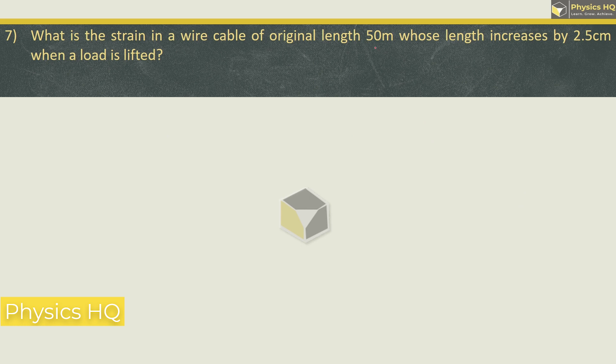What is the strain in the cable of original length 50 meter whose length increased by 2.5 cm? So strain is the change in dimension which is 2.5 cm. So meter is 2.5 × 10^-2 upon original dimension which is 50. When you solve this, you will see 5 × 10^-4. I hope you guys understand.